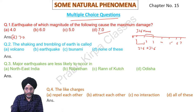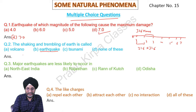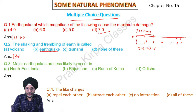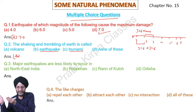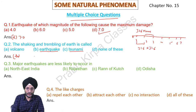The shaking and trembling of the earth is called an earthquake. Tsunami is an earthquake that occurs under the sea. So the answer to 'the shaking and trembling of the earth is called' is earthquake.